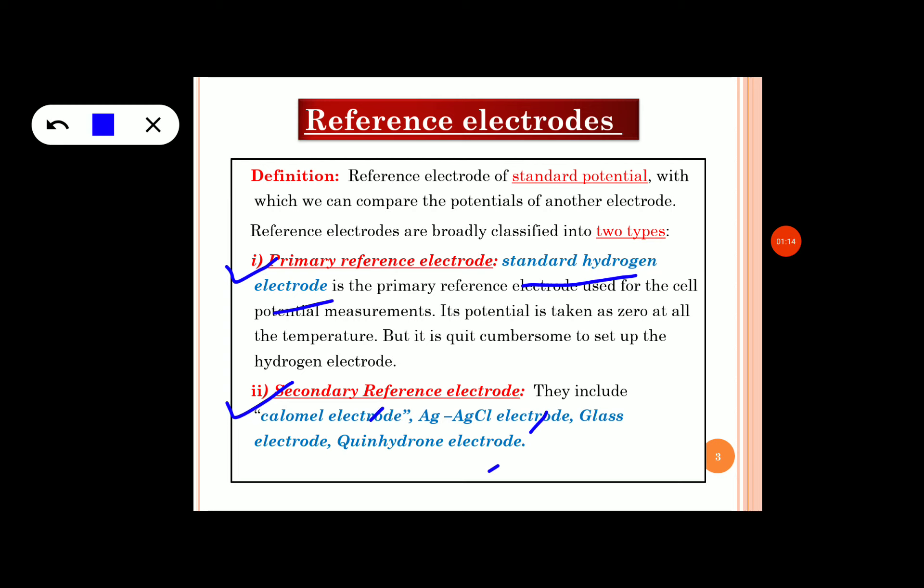A reference electrode basically has a standard potential with which we can compare the potentials of another electrode. In order to construct a cell, we require two electrodes: one should be the working electrode and the other should be the reference electrode. In the case of the reference electrode, the potential is fixed — it has a standard potential — and we can compare the potential developed at the working electrode using the standard reference electrode.